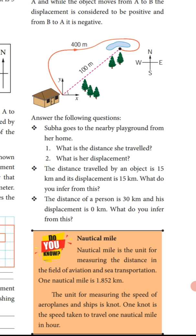Third question: the distance of a person is 30 kilometers and his displacement is 0 kilometers. What do you infer from this? The answer is: the starting point and finishing point are the same.